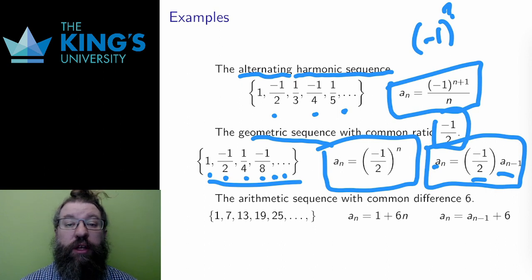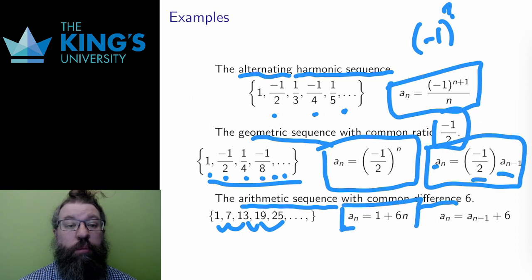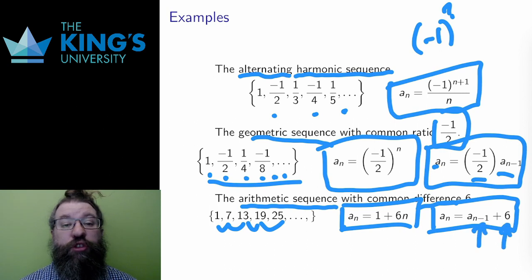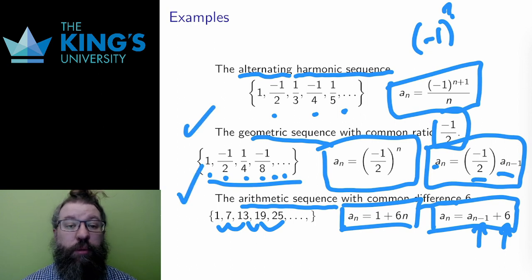Similarly, there is a whole family of arithmetic sequences. These are sequences where there is a common difference between the terms. In this example, the common difference is 6. Each term minus the previous term is 6, and the sequence starts at 1. The direct form is a_n equals 1 plus 6 times n, and the recursive form is a_n equals a_(n-1) plus 6. Each term is the previous term plus 6. Arithmetic and geometric sequences are both important types, and I shall talk about them throughout the next few weeks of the class.